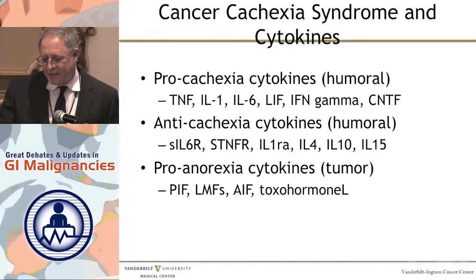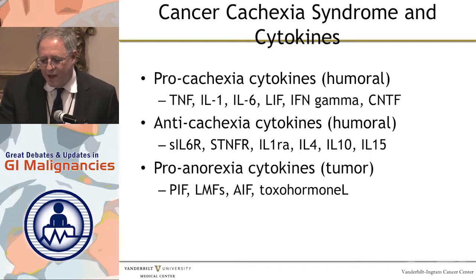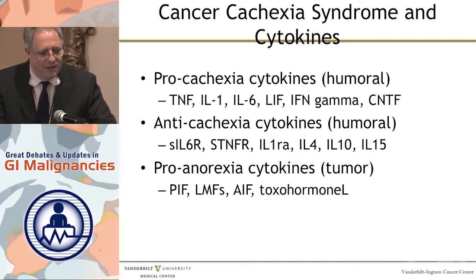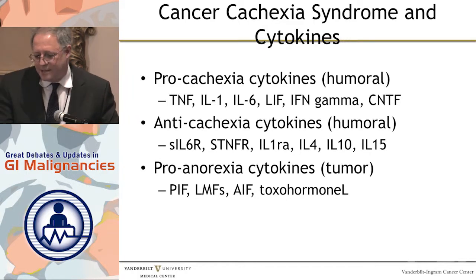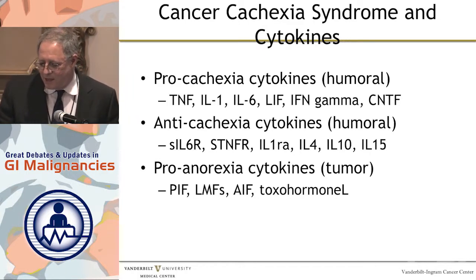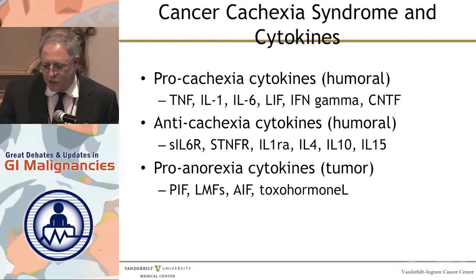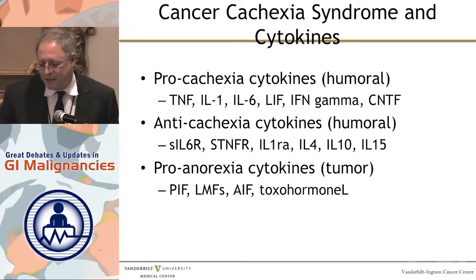The cancer cachexia syndrome has a lot of causes, and we probably don't even understand all of them. I'm just listing off some of the pro-cachexia and anti-cachexia cytokines — I'm not going to test you on these later — and some of the things that are actually produced in the tumor that cause anorexia, which we know is a huge problem with these patients.